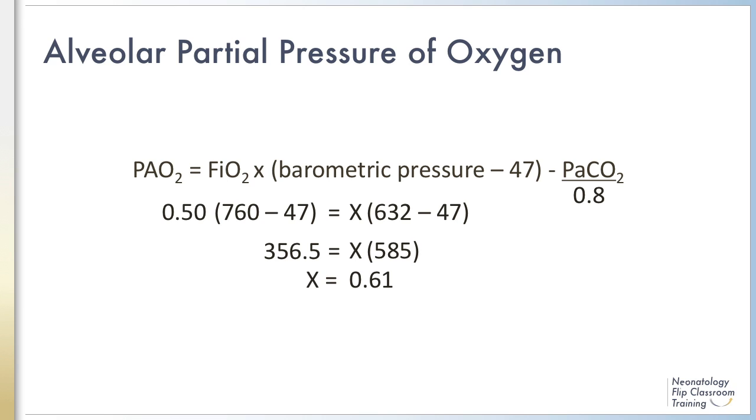Which means that our new FIO2 that our patient will require in Denver is 61%. Just to make it even easier, since the water vapor pressure is assumed to be similar, you could solve and get the correct answer without even subtracting 47 on either side.